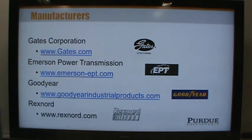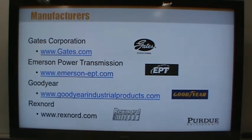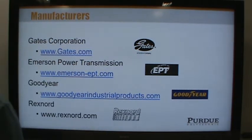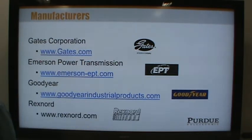Here are some well-known belt manufacturers: Gates, Emerson, Goodyear, and Rexnord — all industrial names you'll become familiar with. They make all sorts of different rubber belts.